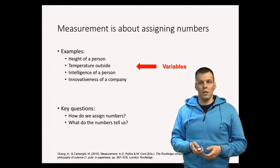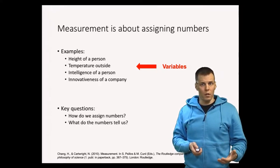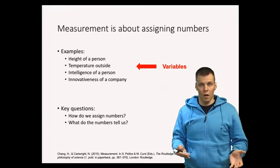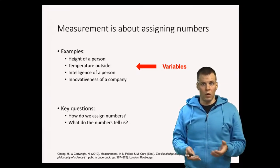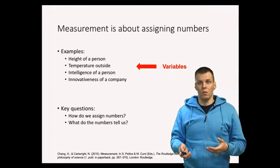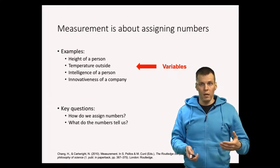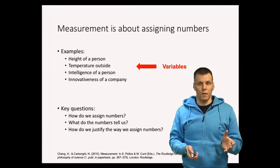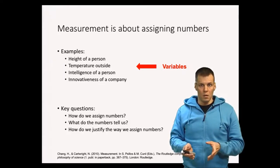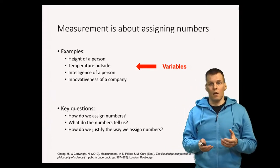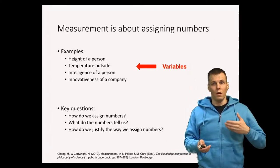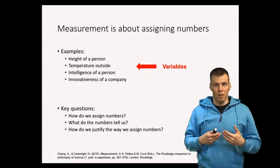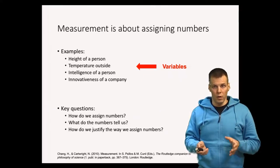The next question is: what does the number tell you? So if you say that a company's innovativeness is five, is it a lot or a little? What does it actually mean? We're talking about the meaning and interpretation of the number. Finally, how do we justify the way we assign the numbers? Besides just getting the numbers, we have to convince our readers and ourselves that our numbers are actually valid for the purpose we are using them for.